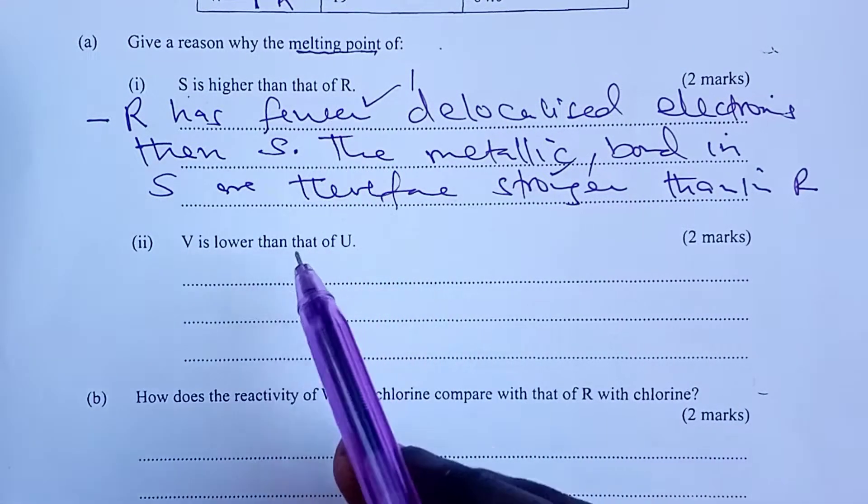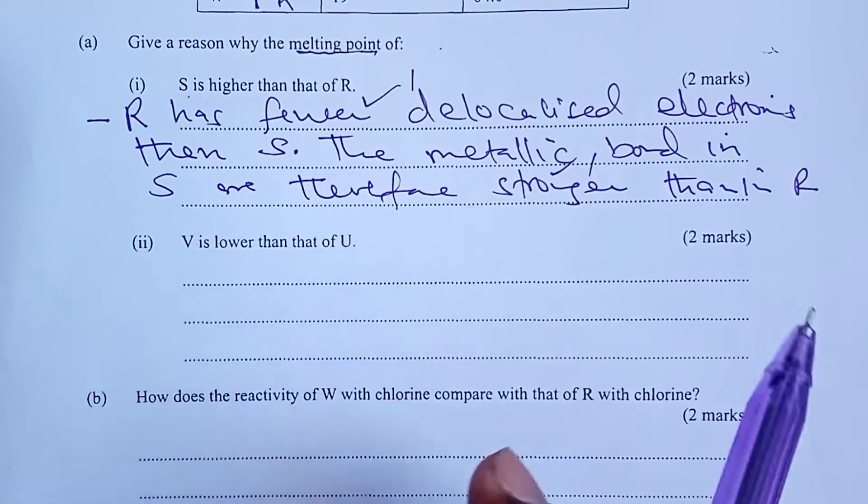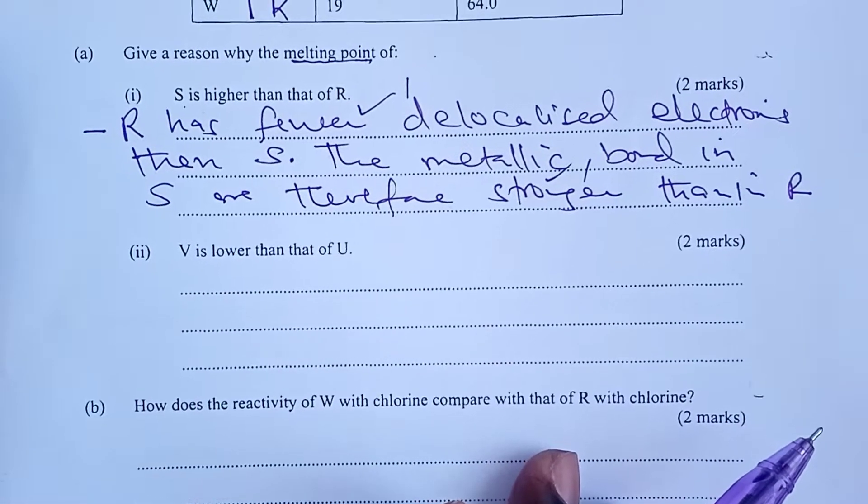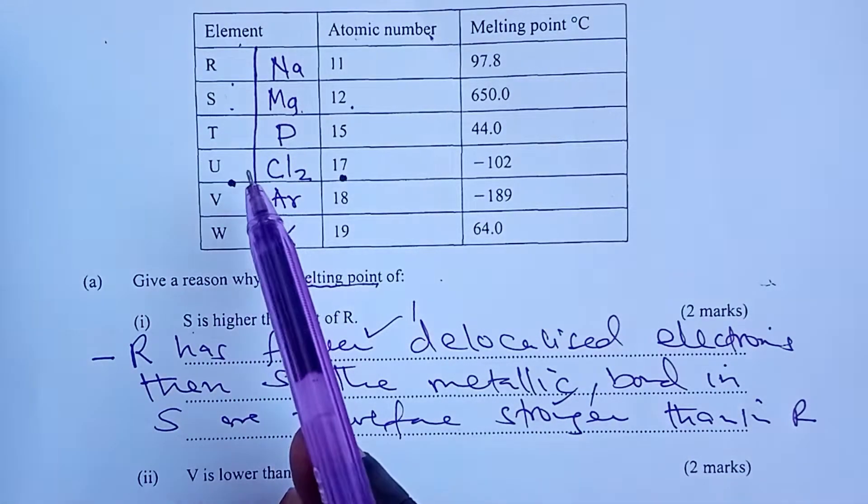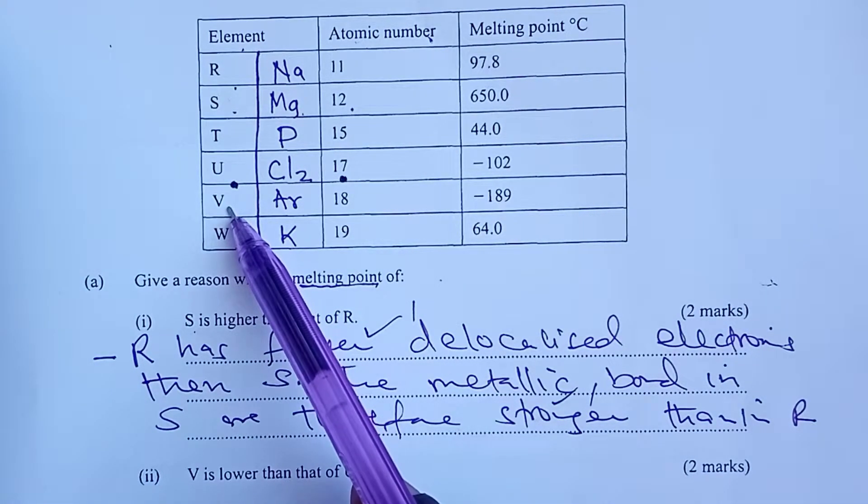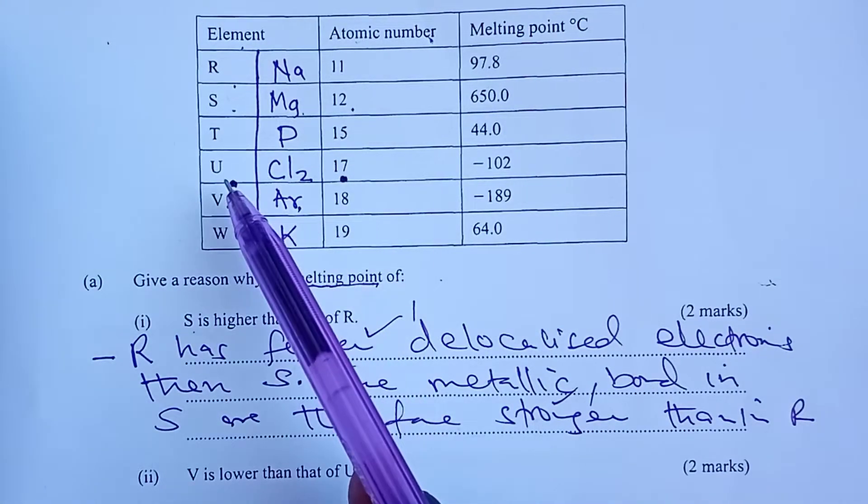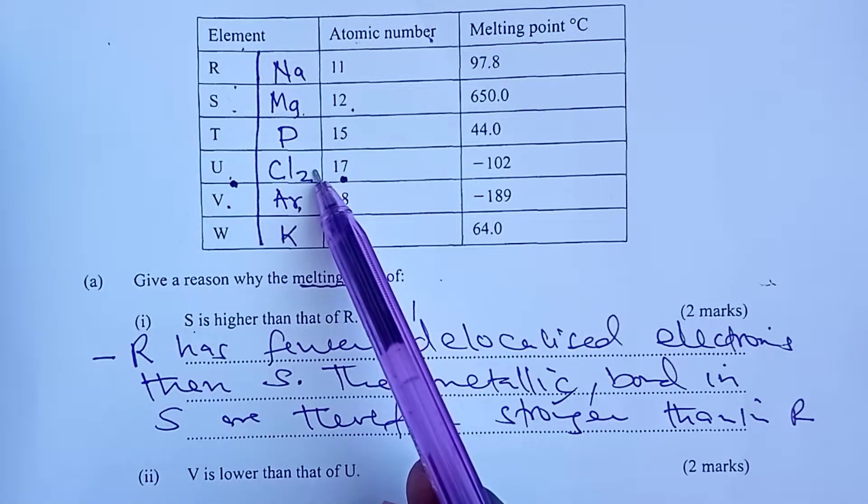Moving on, the same melting point, we are being asked why V has a lower melting point than U. Moving up to our table again, we are being asked to compare V, which is argon, with U, which is chlorine. Here, the examiner wanted an understanding of the existence of these two molecules.